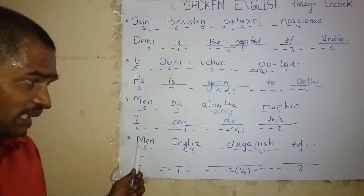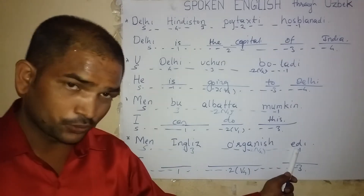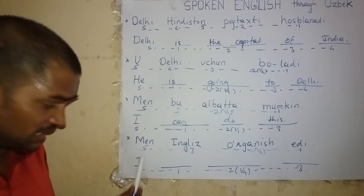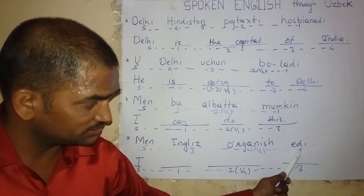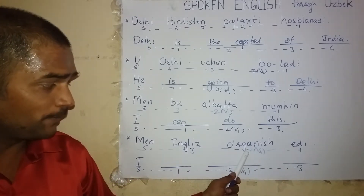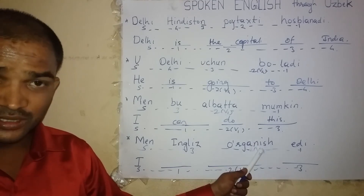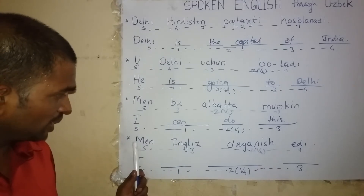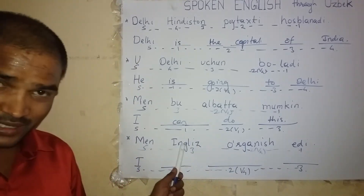Look here. I was learning English. First, find the subject — 'men,' the English word is 'I.' Go to the end of the sentence: above one is 'edi,' the English word for 'edi' is 'was.' Then come back: before one about two is 'organic' — the English word is 'learning.' Before two about three is 'English.' I was learning English.